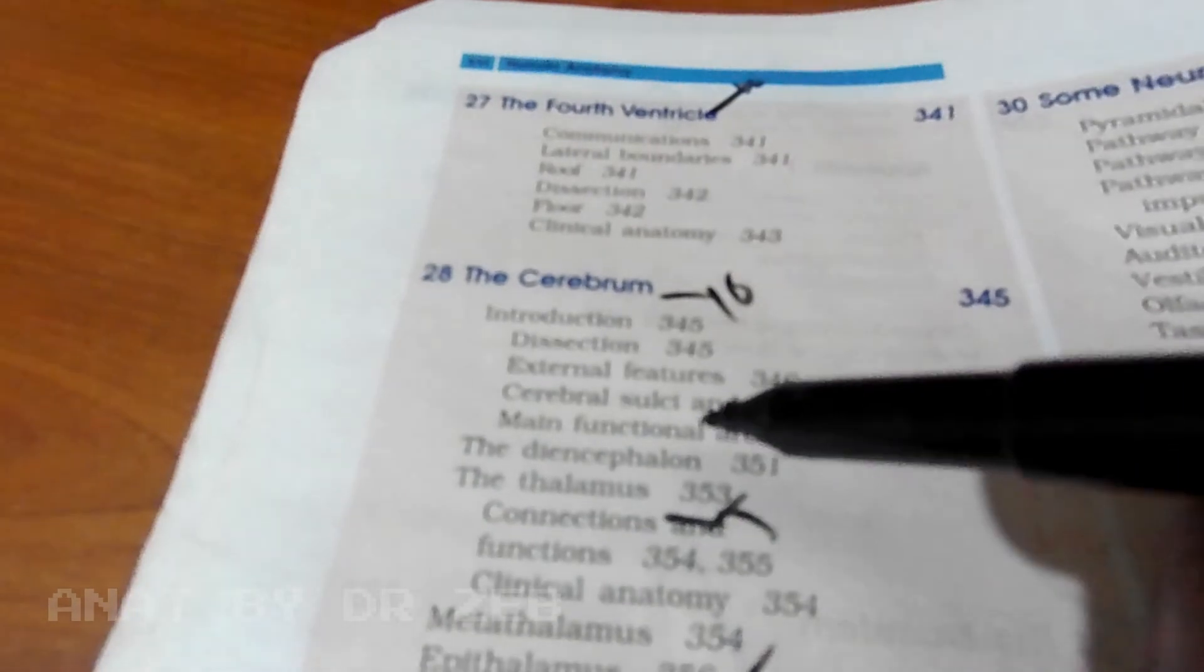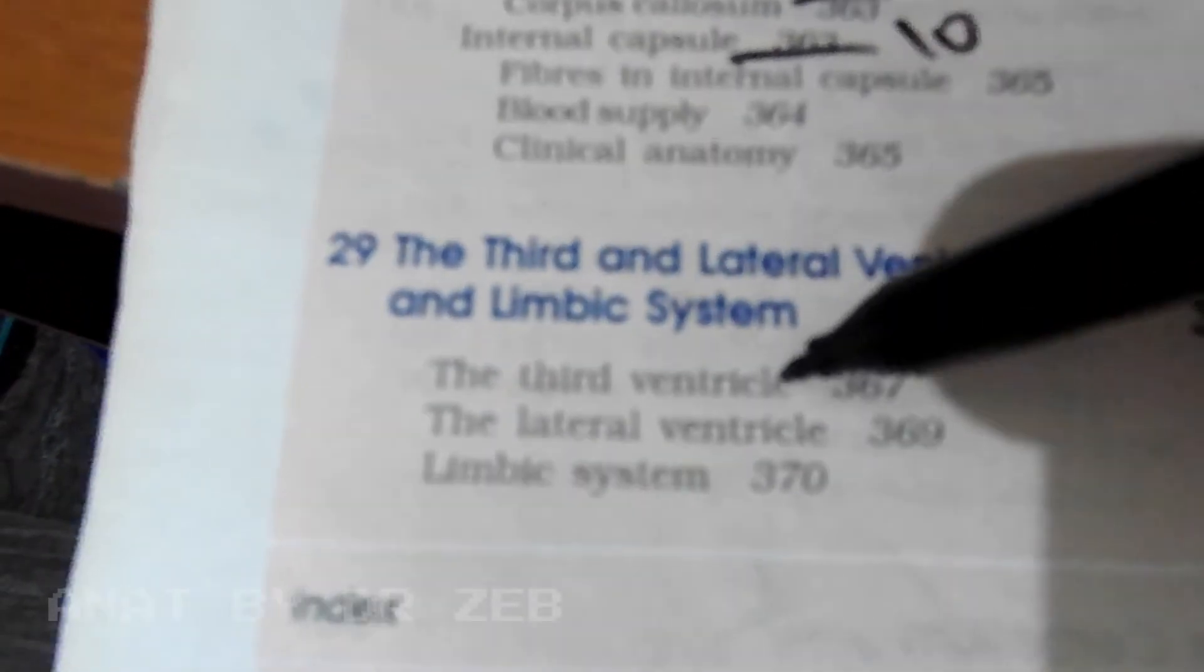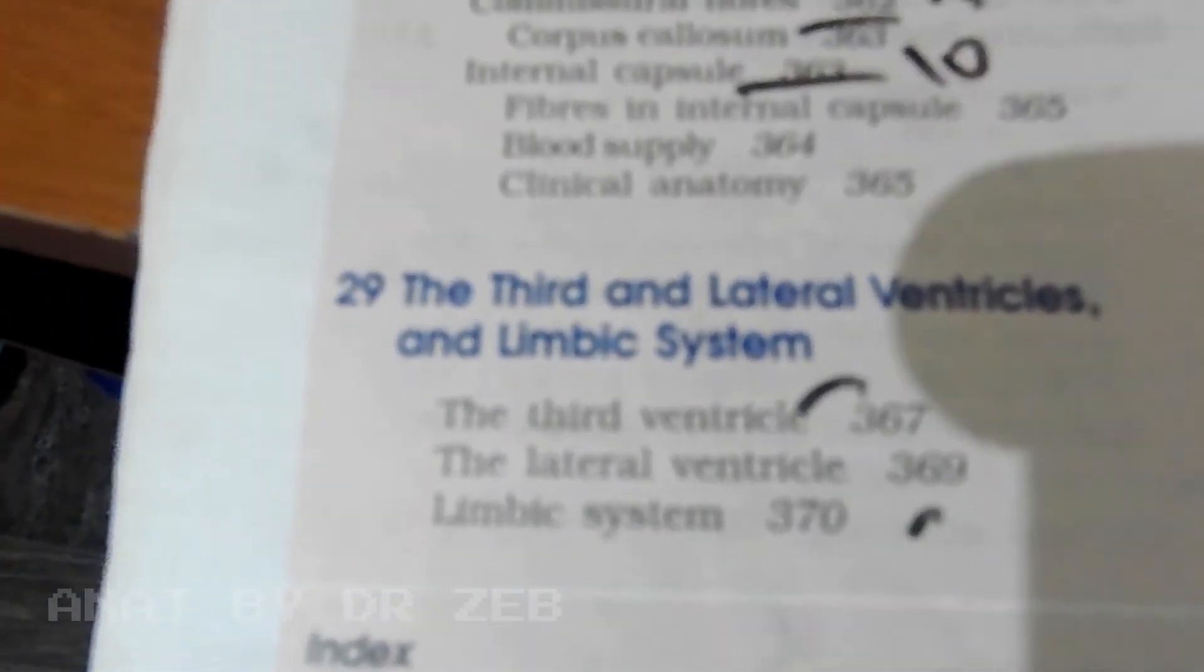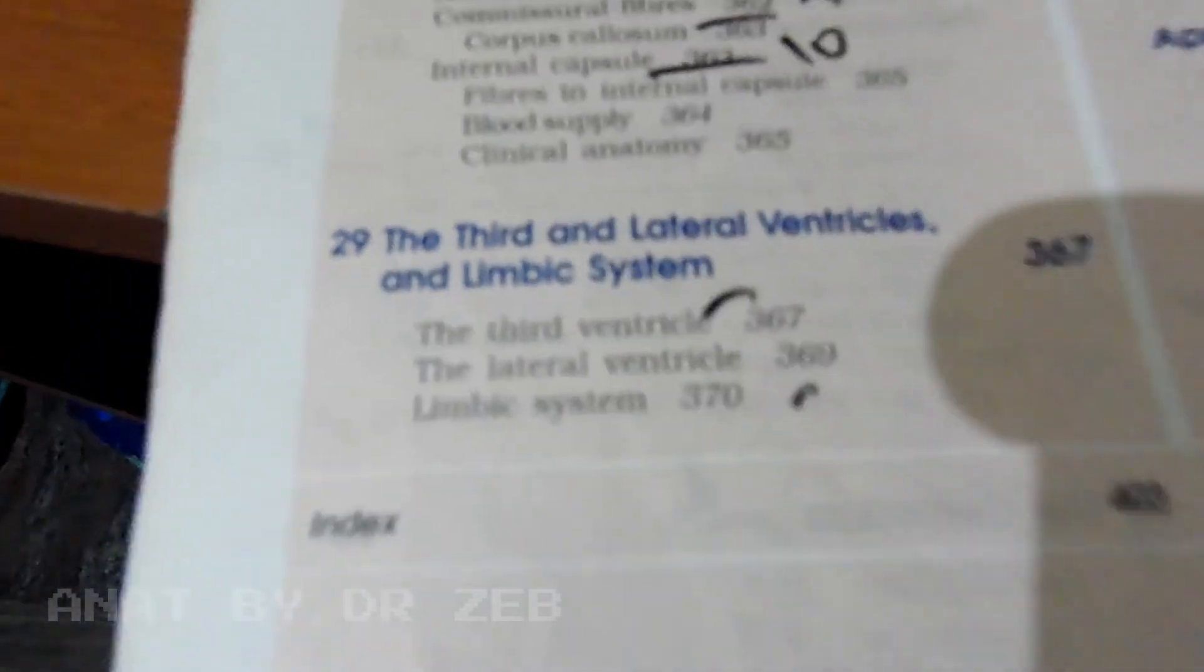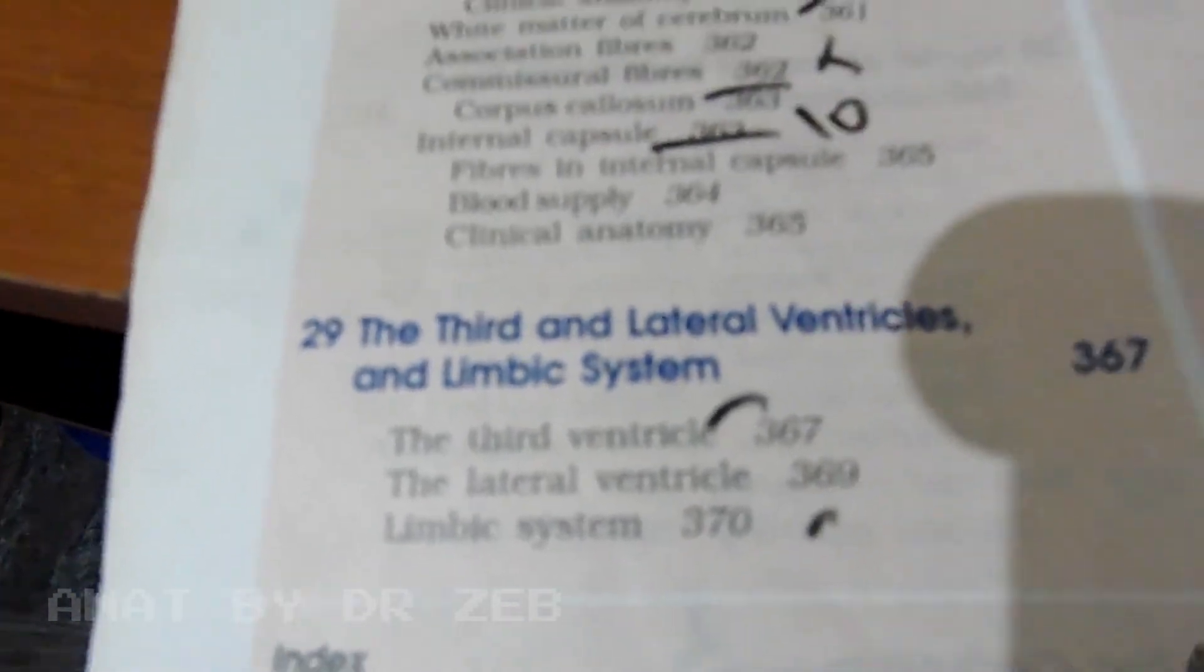Describe the superior lateral surface of cerebrum, write the sulci and the gyri for ten marks. Third and lateral ventricle, very easy, five marks questions. Blood supply of the brain, circle of Willis for five marks, and the blood supply of spinal cord. The veins of the cerebrum for five marks.